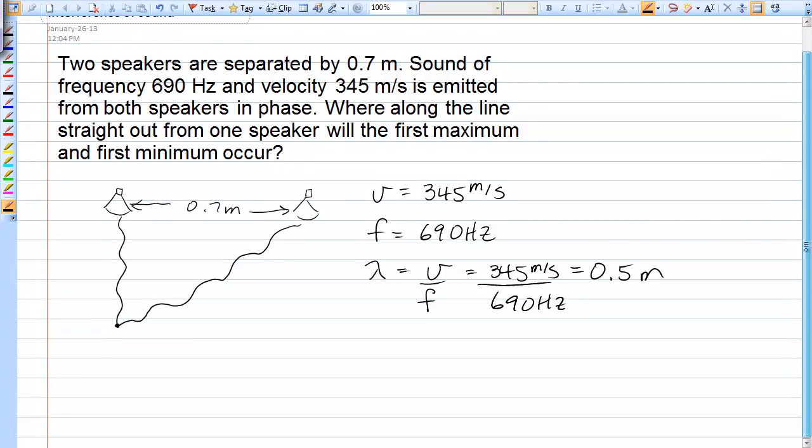Now, the condition for constructive and destructive interference between two waves has to do with how much further one wave goes than the other. So let's just look at one wave travels, say, that distance.